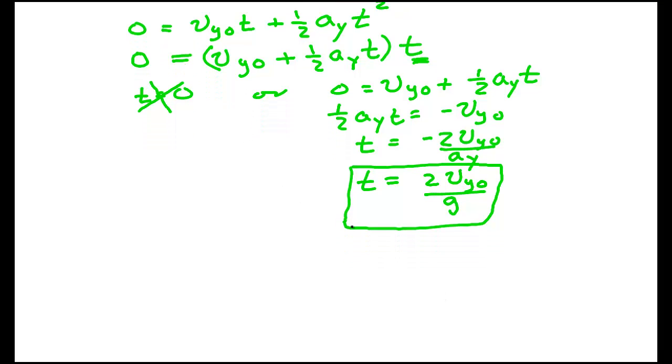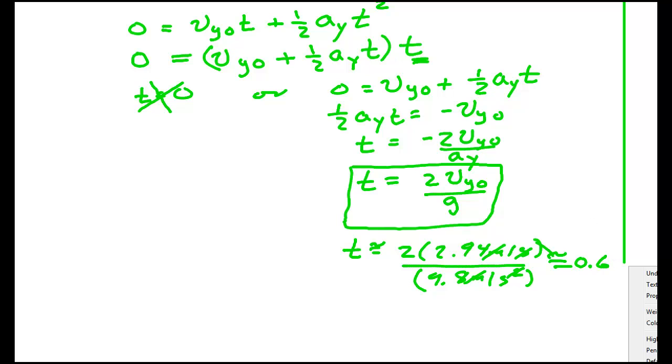Let's put in some numbers here. t is equal approximately to 2 times 2.94 meters per second over 9.8 meters per second squared. I see the meters cancel. One of the seconds cancels. And seconds comes to the top. So it's got the right units. I have about 10 on the bottom. 2 times 2.94 is about 6 on the top. So I have about 6 divided by 10. That should be about 0.6 seconds. I can punch a calculator and get an exact number. And I get 0.6 seconds. Exactly.